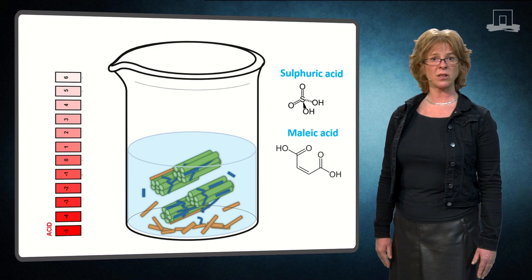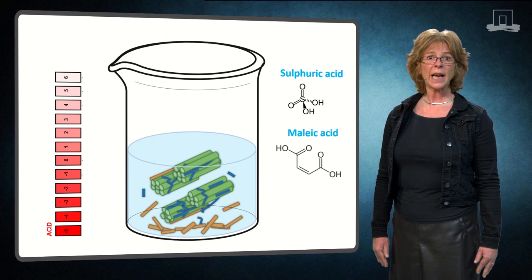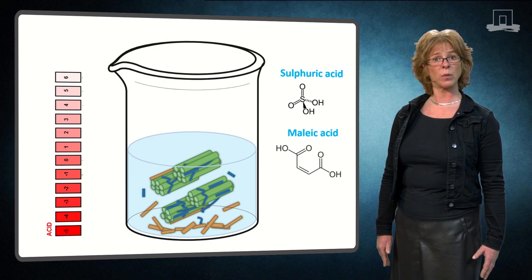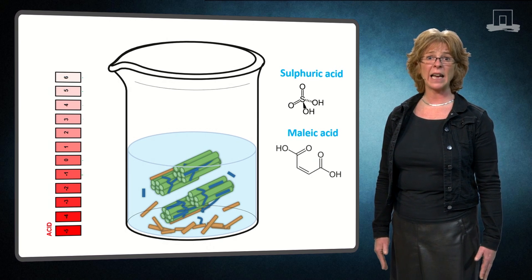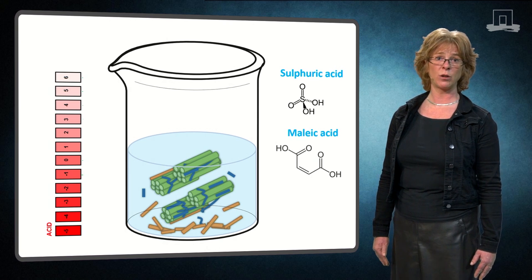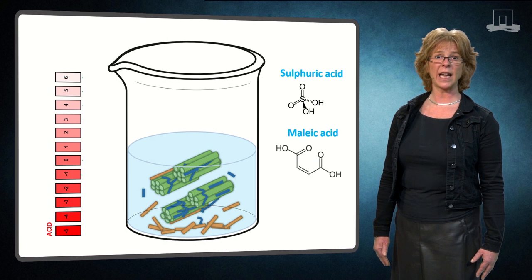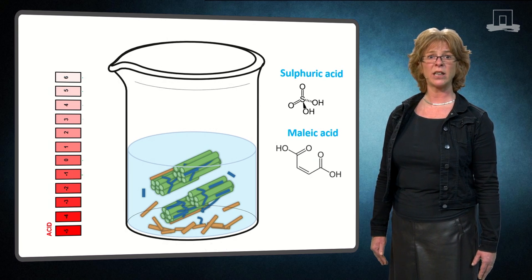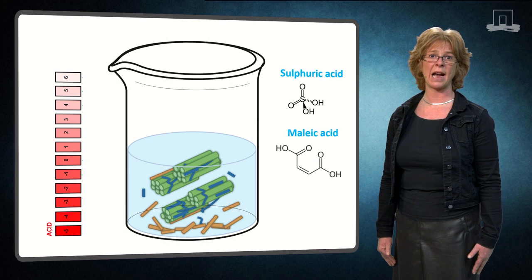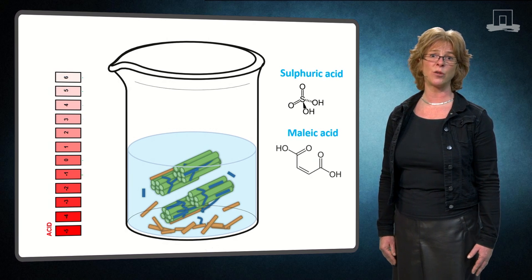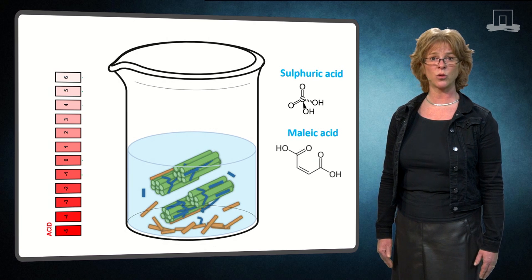For example, mineral acids, such as sulfuric acid or organic acids, such as maleic acid, can be used. This approach can lead to high levels of removal of hemicellulose. Nevertheless, depending on the severity of the conditions, undesired acid-catalyzed reactions of monosaccharides to furanic compounds can also take place.